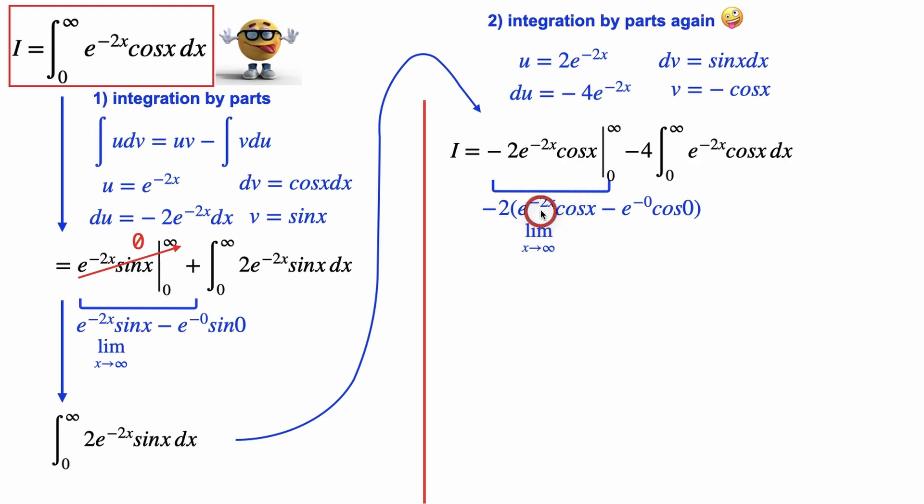This is 1, and then cos of 0 is 1. So this whole thing becomes positive 2, which is awesome.